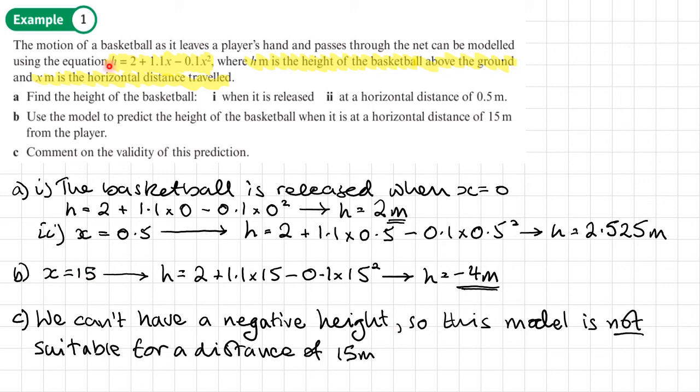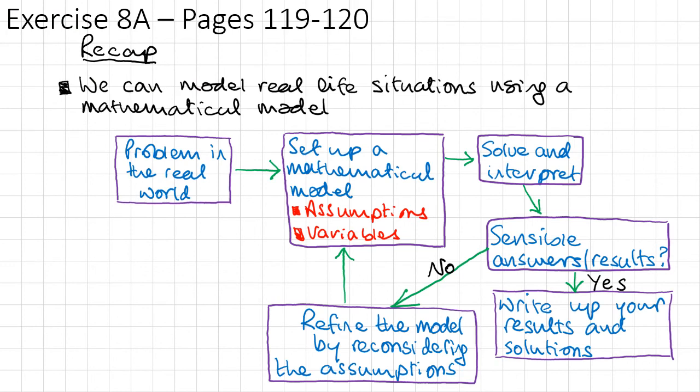Now what we could do, and we're not asked to do it in this question, we could work out the value of x, the maximum value of x for which this model is suitable. Maybe what we'd do would make H equal to 0 and work out that value of x, and that will tell us the maximum horizontal distance for which this model is valid. You should now be able to do exercise 9a on pages 119 to 120 of the textbook.